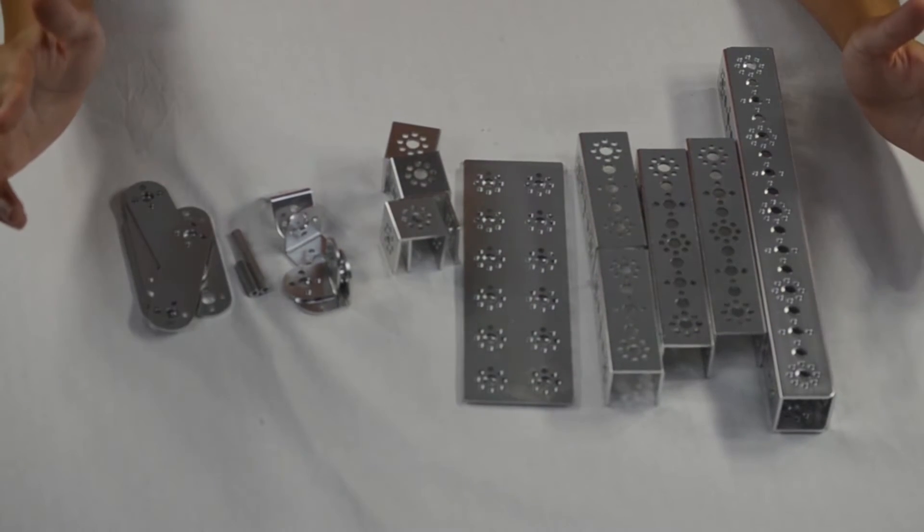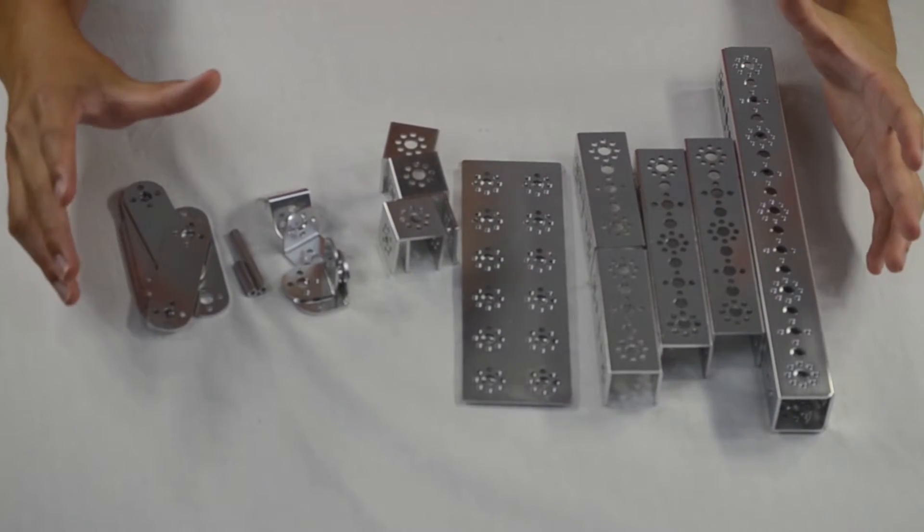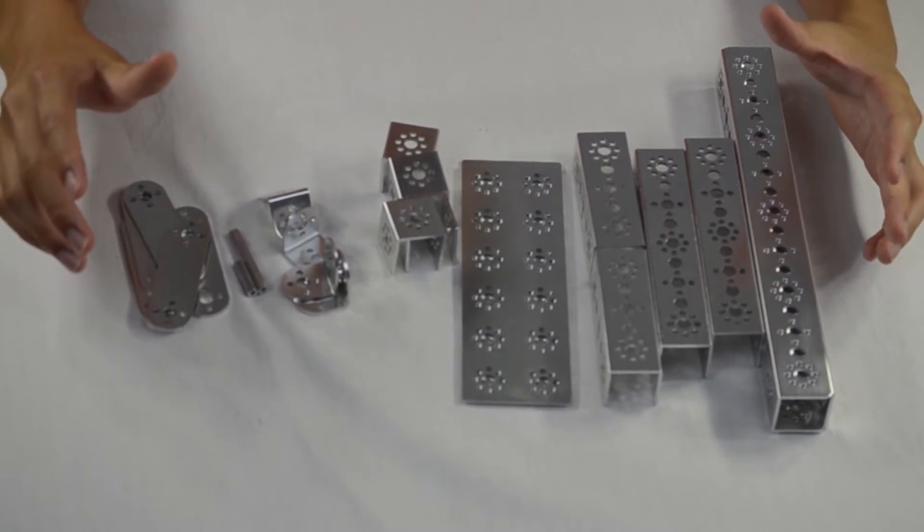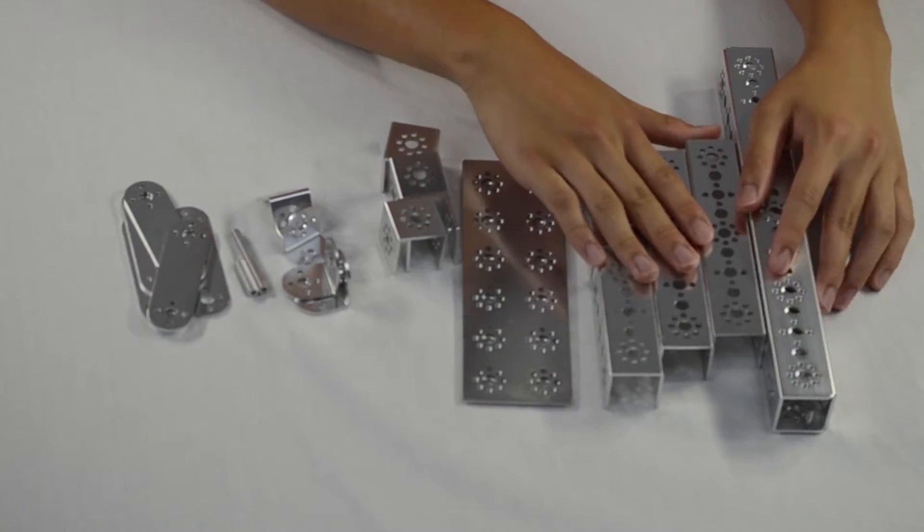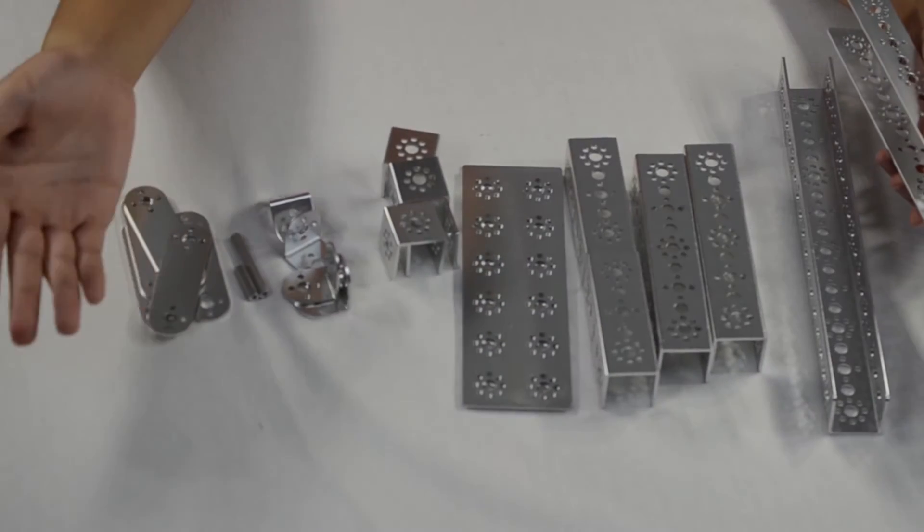Alright, so now moving on to the actual parts. These are the main building blocks that you will have and you can test with them. You have your various beams. You get two of each beam in the kit of parts.